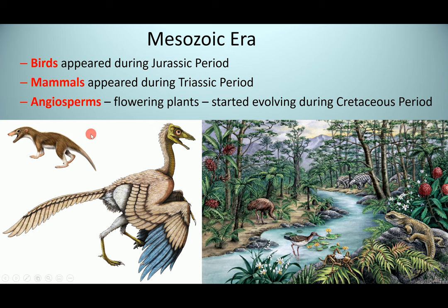During the Mesozoic era, we started seeing some birds — Archaeopteryx is considered the transitional organism between dinosaurs and birds, and is the first known organism to have feathers instead of scales. Mammals started to appear during the Triassic but were very small, rodent-like animals. Angiosperms — flowering plants — started to evolve during the Cretaceous period, and we began to see the world starting to look a bit more like it does today, with forests.